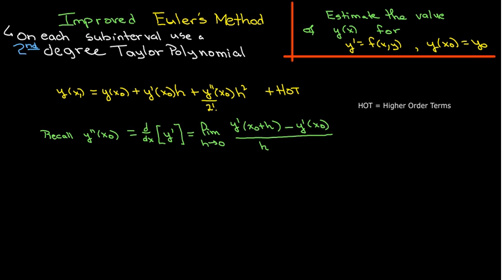All right, so we know how to get an estimate of y prime, because we have it in our differential equation, y prime equals f of x comma y. Well, what about y double prime, the second derivative? Well, the second derivative is just the derivative of the first derivative. And so by the definition of the derivative, that would be the limit as h approaches 0 of y prime at x naught plus h minus y prime at x naught all over h.